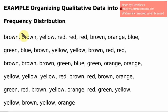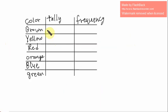Here is the raw data. I notice we have the brown color, the yellow color, the red color, the orange, blue, and green. I will make a table with a column representing the category (color), another column for tallies, and then the frequency, which is the number of occurrences of each color.